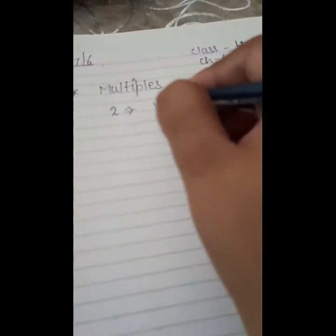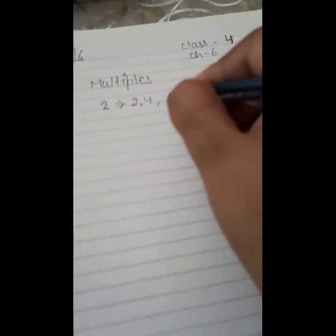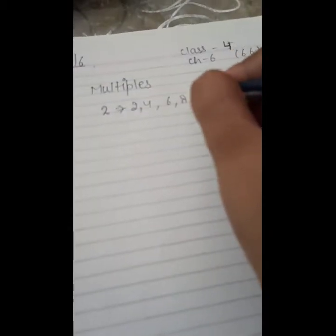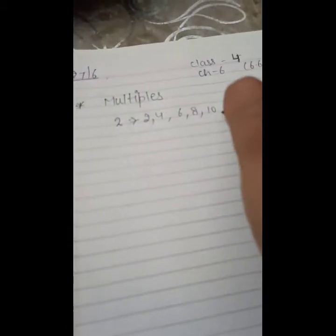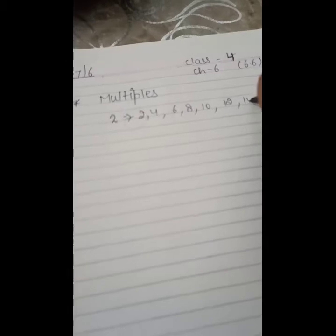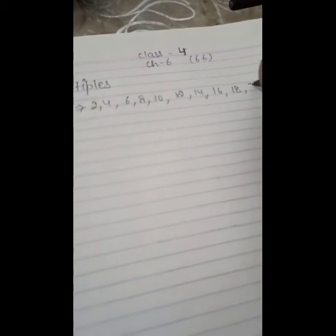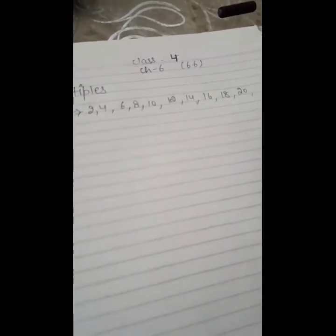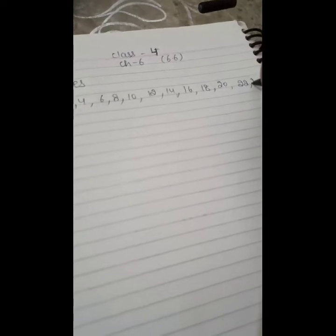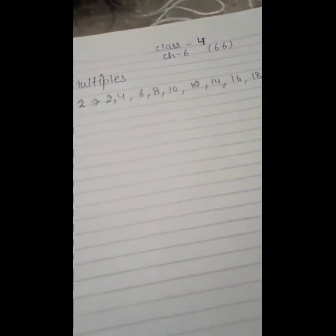2, 4, 6, 8, 10, 12, 14, 16, 18, 20, 22, 24 and so on. They all are the multiples of 2.